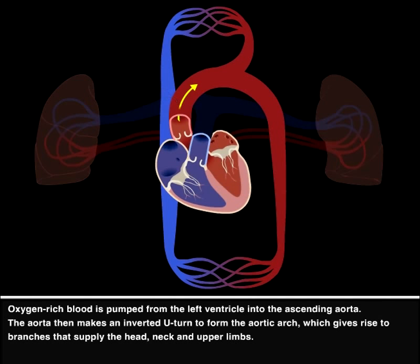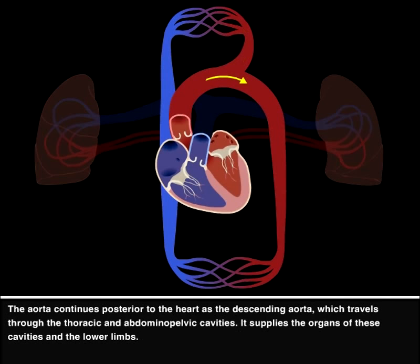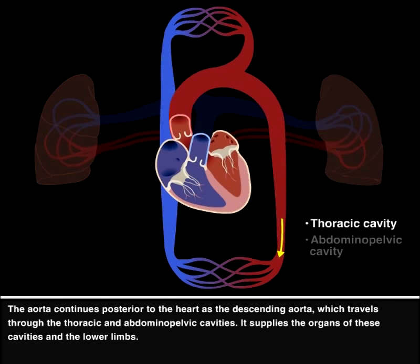The aorta then makes an inverted U-turn to form the aortic arch, which gives rise to branches that supply the head, neck, and upper limbs. The aorta continues posterior to the heart as the descending aorta, which travels through the thoracic and abdominal pelvic cavities. It supplies the organs of these cavities and the lower limbs.